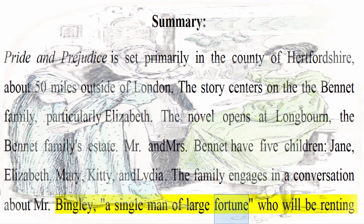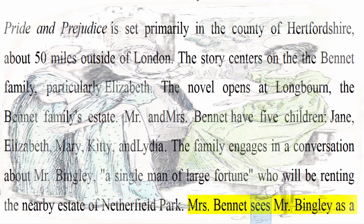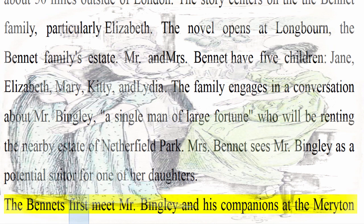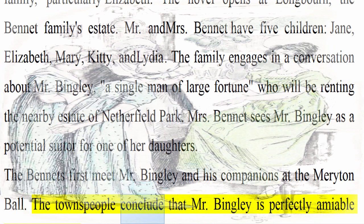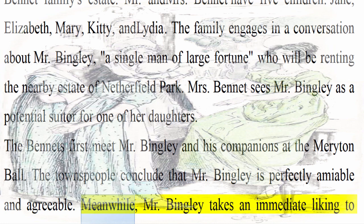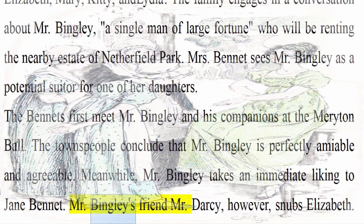Mrs. Bennet sees Mr. Bingley as a potential suitor for one of her daughters. The Bennets first meet Mr. Bingley and his companions at the Merriton Ball. The townspeople conclude that Mr. Bingley is perfectly amiable and agreeable. Meanwhile, Mr. Bingley takes an immediate liking to Jane Bennet. Mr. Bingley's friend Mr. Darcy, however, snubs Elizabeth. The community decides that Darcy is proud and disagreeable because of his reserve and his refusal to dance.